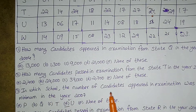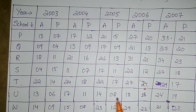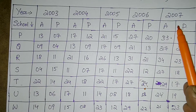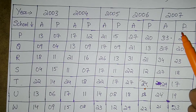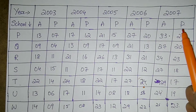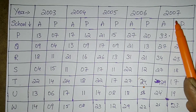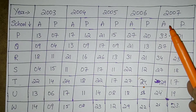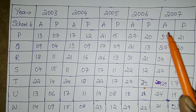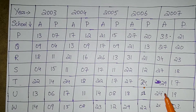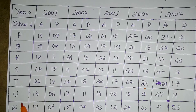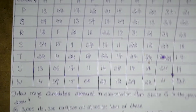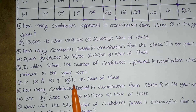In which school was the number of candidates appeared in examination minimum in the year 2007? Under the appeared column in 2007, we find the smallest number, which is 24. So the answer is state U.